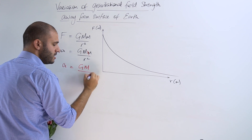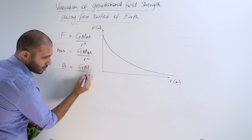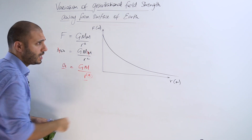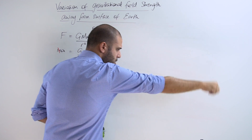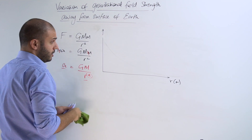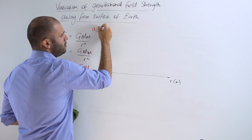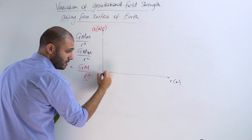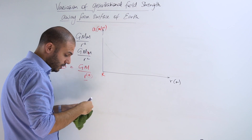In fact, this is very clear that the square is still there in the denominator. So if we need to sketch a graph of — not force this time — but acceleration in meters per second squared, and we're taking this initial point as being the surface of Earth.